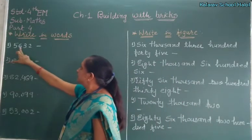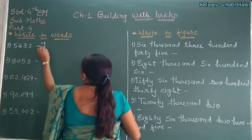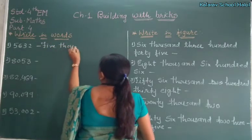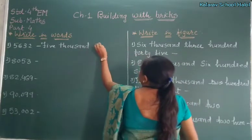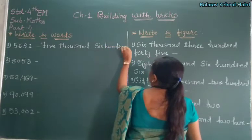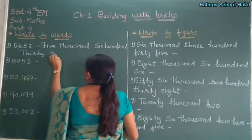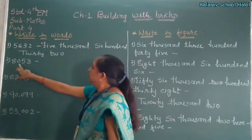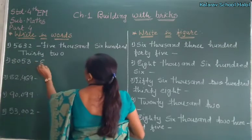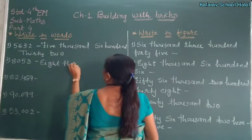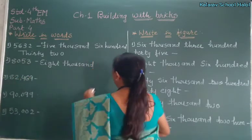How to write 5,000 in words? Five thousand. Now 6,032 — 6,000, then 30, 2. See: 1, 10, 100, 1,000. Now 100's place has 0, so 100 won't come. 8,053 — 8,000. 100's place is 0, so we go direct to 53.